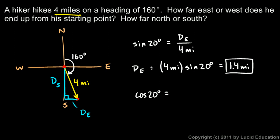So let's write that and then just rearrange that algebraically to solve for D_s. D_s will be four miles times the cosine of 20 degrees, and on the calculator that comes out to be 3.8 miles.